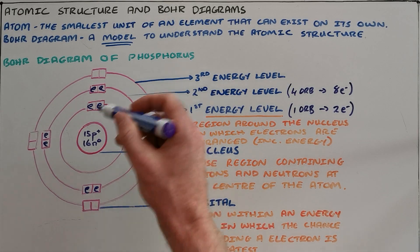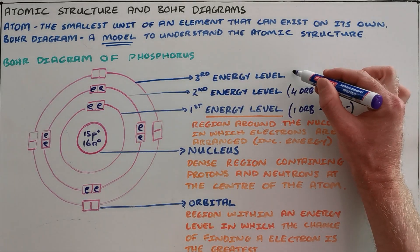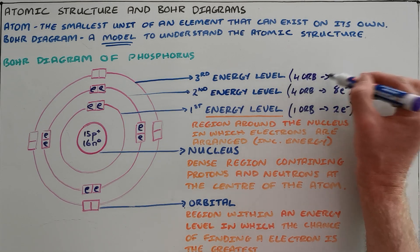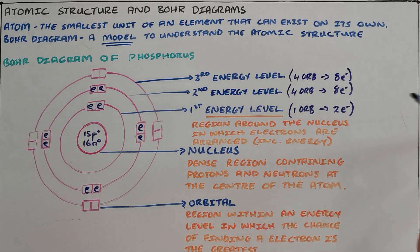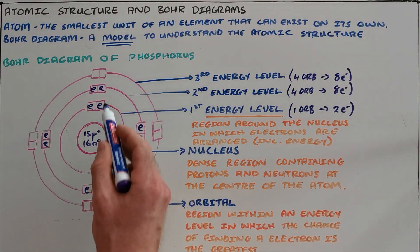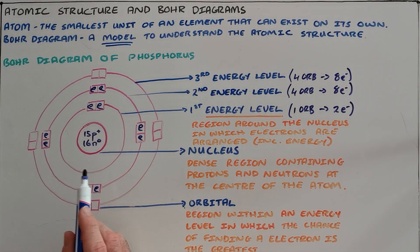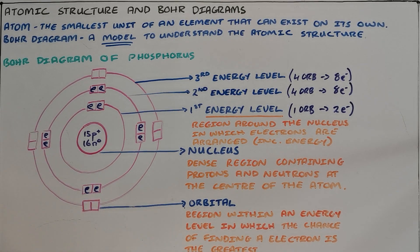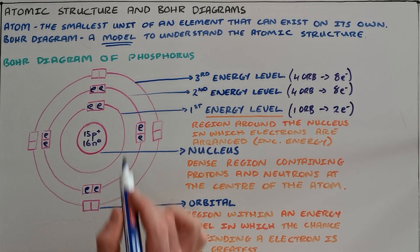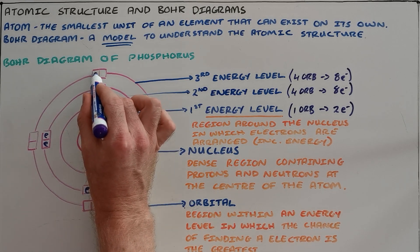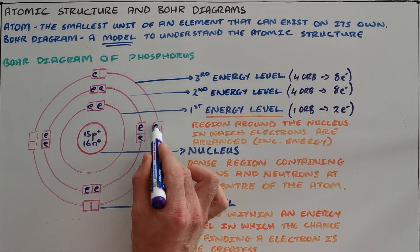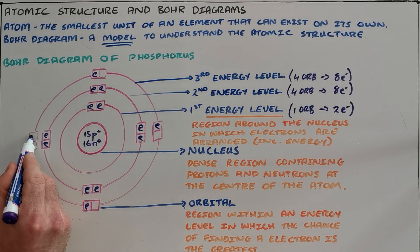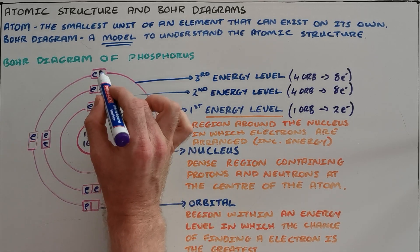The third energy level is exactly the same as the second energy level where there are four orbitals, which means a maximum of eight electrons. Although we can see here that this atom of phosphorus already has 10 electrons drawn in. Since we need only 15 electrons, we only must add five more. Once again, we add one electron to each orbital before we start filling the orbitals.